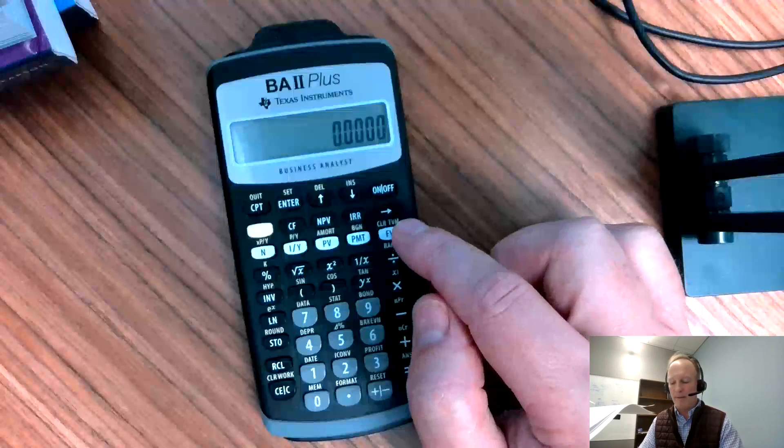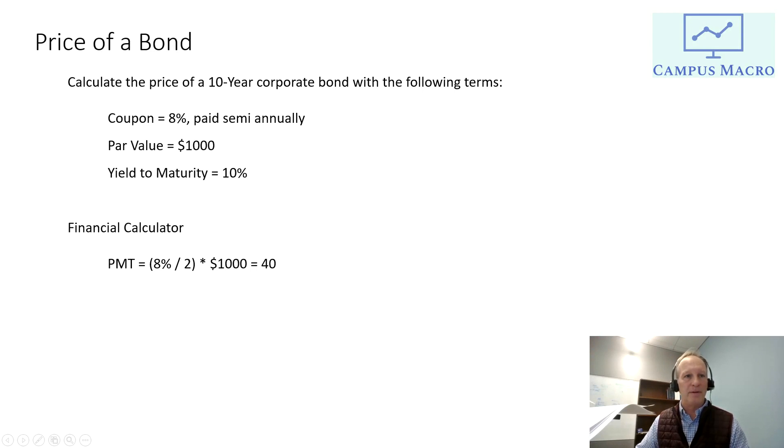So the payment, of course, go back to the screen here. The payment is going to be the coupon payment. It's 8%, but it's divided by 2 because it happens every six months, and I multiply that by the par value. So every six months, the terms of this contract says I'm going to get $40. So by buying this bond, I get $40 every six months for 10 years.